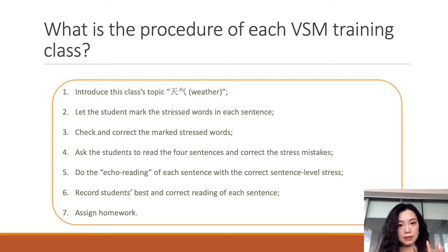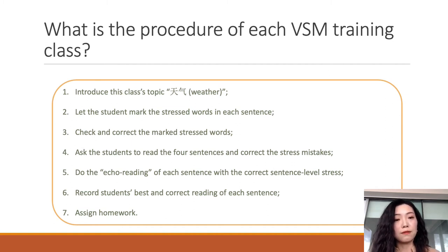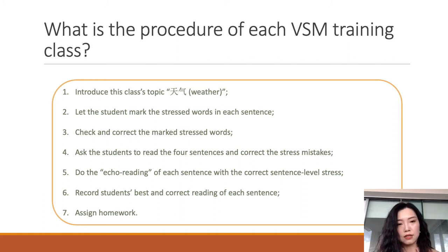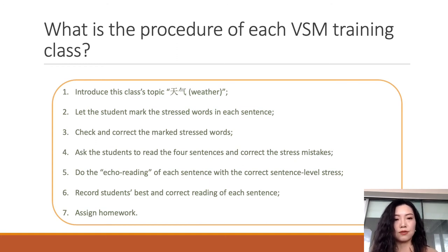Step five: do the reading of each sentence with the correct sentence-level stress. The student and teacher practice the reading of each sentence until the student can acquire the correct sentence-level stress. Step six: record the student's best and correct reading of that sentence.